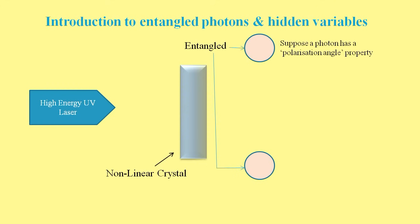Now, let's just suppose a photon has a property that we'll refer to as a polarization angle. For example, this one is 5 degrees. Its entangled partner will have a related property. And let's say the polarization angles of entangled particles differ by 180 degrees.